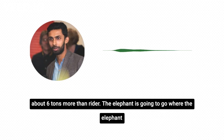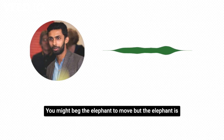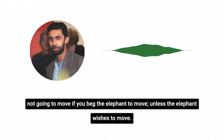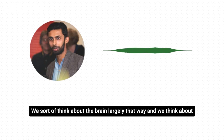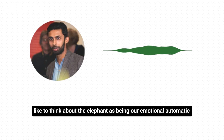The elephant is going to go where the elephant wants to go. You might beg the elephant to move, but the elephant's not going to move unless the elephant wishes to move. We sort of think about the brain largely that way — the human rider as being the rational brain, and the elephant as being our emotional, automatic brain.